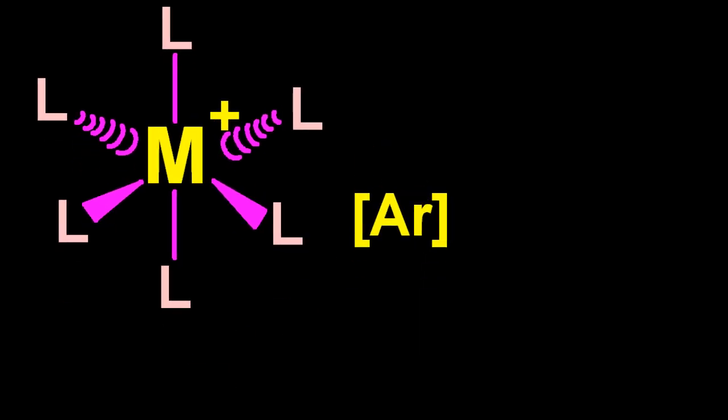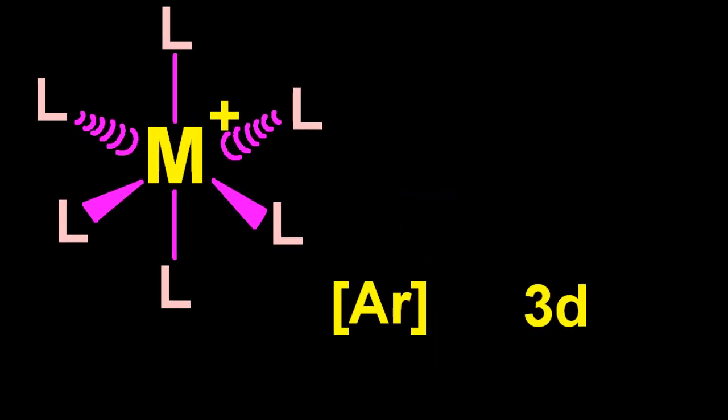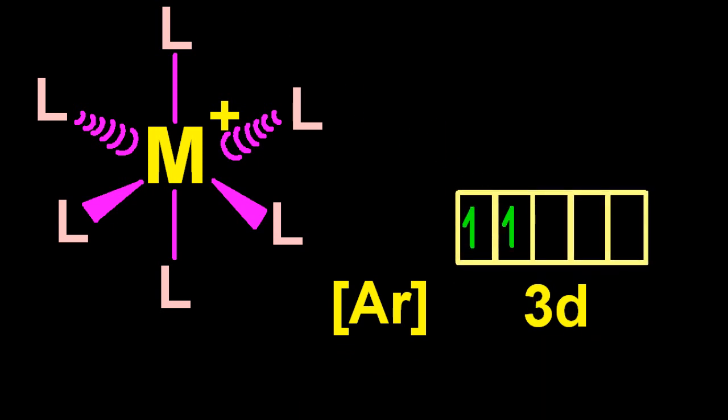So a complex is made of a central transition metal ion with ligands datively covalently attached. Now the fourth reason that isn't IB is how many ligands are attached, but we are only going to look at six ligands, the so-called octahedral shape. So the electronic configuration, shorthand, is argon 3d2.